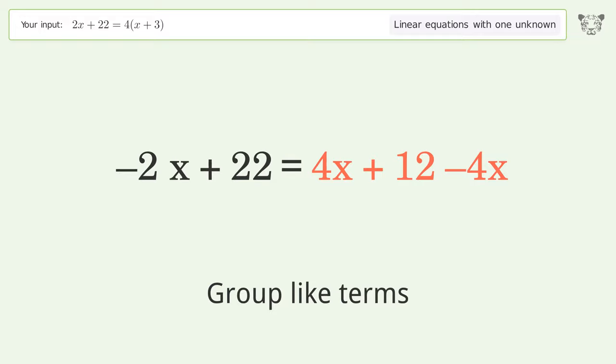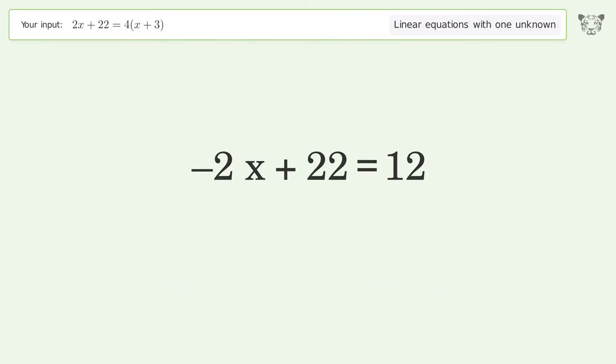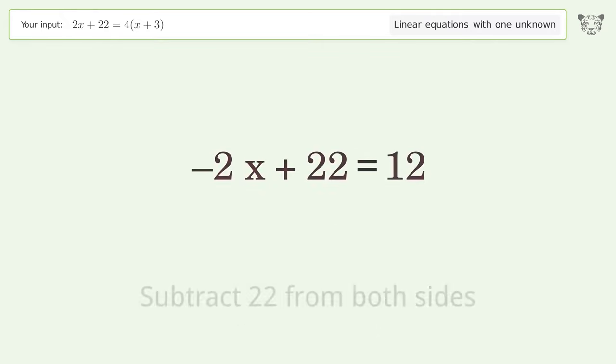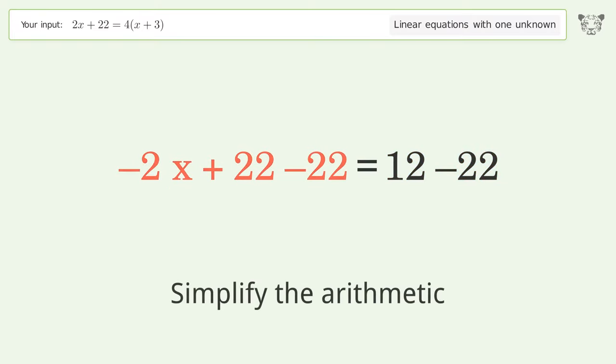Group like terms. Simplify the arithmetic. Group all constants on the right side of the equation. Subtract 22 from both sides. Simplify the arithmetic.